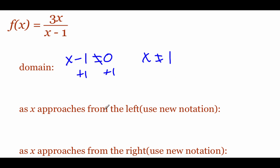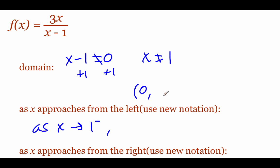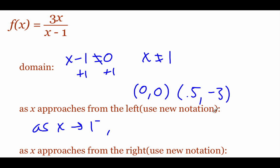We're going to test what's happening around x equals one. First, as x approaches one from the left-hand side, we'll plug in some test values. Zero is to the left of one: three times zero is zero, on the bottom we get negative one, so zero divided by negative one is zero. Moving closer to one — if we plug in 0.5, we get back negative three. As we move closer to one, our f of x values are getting negative, approaching negative infinity.